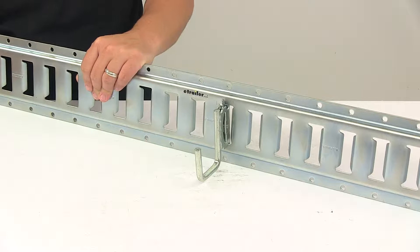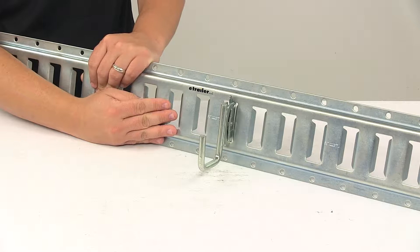Today we're taking a look at the Brophy J-Hook for E-Track systems. This square J-Hook mounts to your E-Track system, so you can hang accessories inside your trailer.